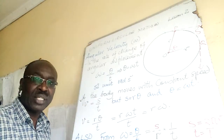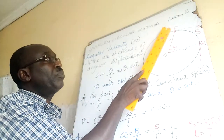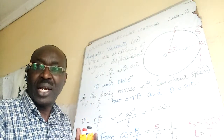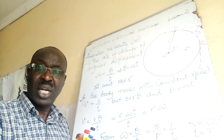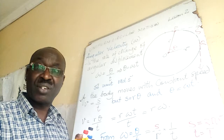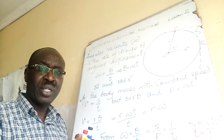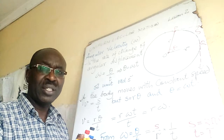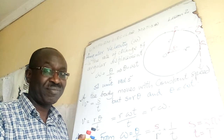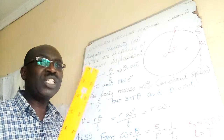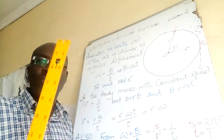Now let's go deeper. If a body is moving with constant speed, I will use the letter V for constant speed. For displacement, we tend to use S — remember from form 3: V equals U plus aT, S equals UT plus half aT squared, and V squared equals U squared plus 2aS. So displacement uses S, and I will use V for constant speed.